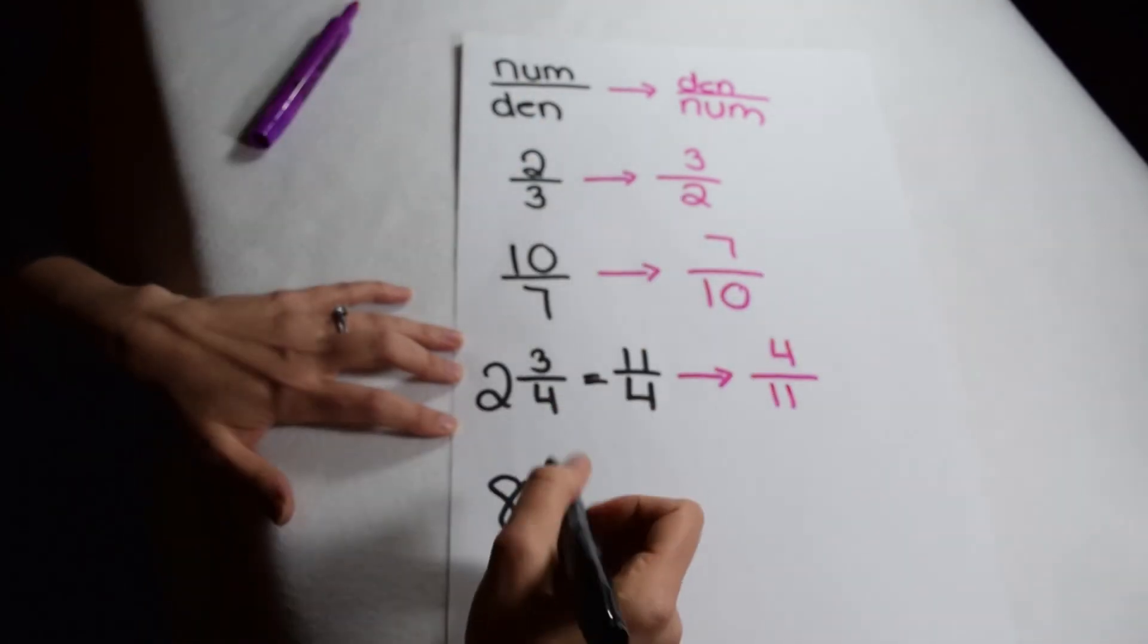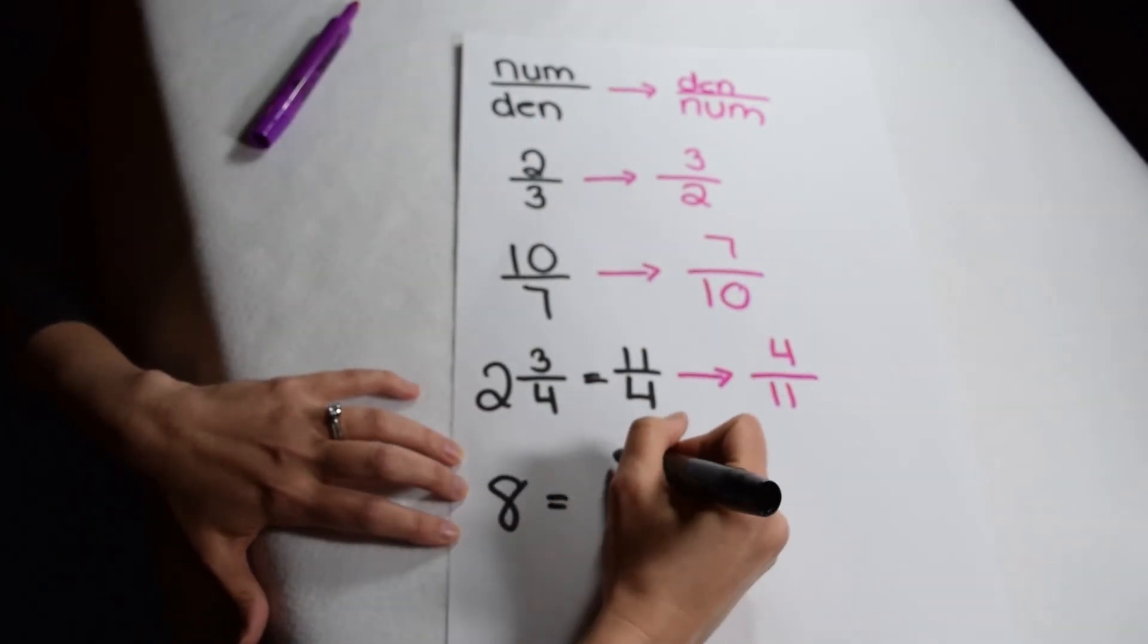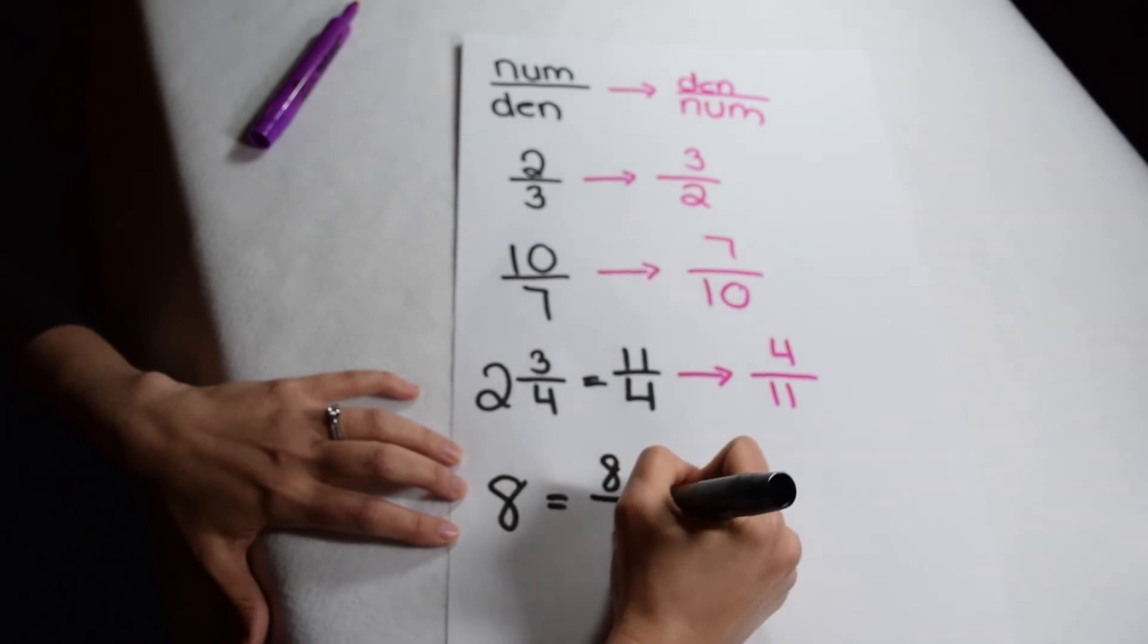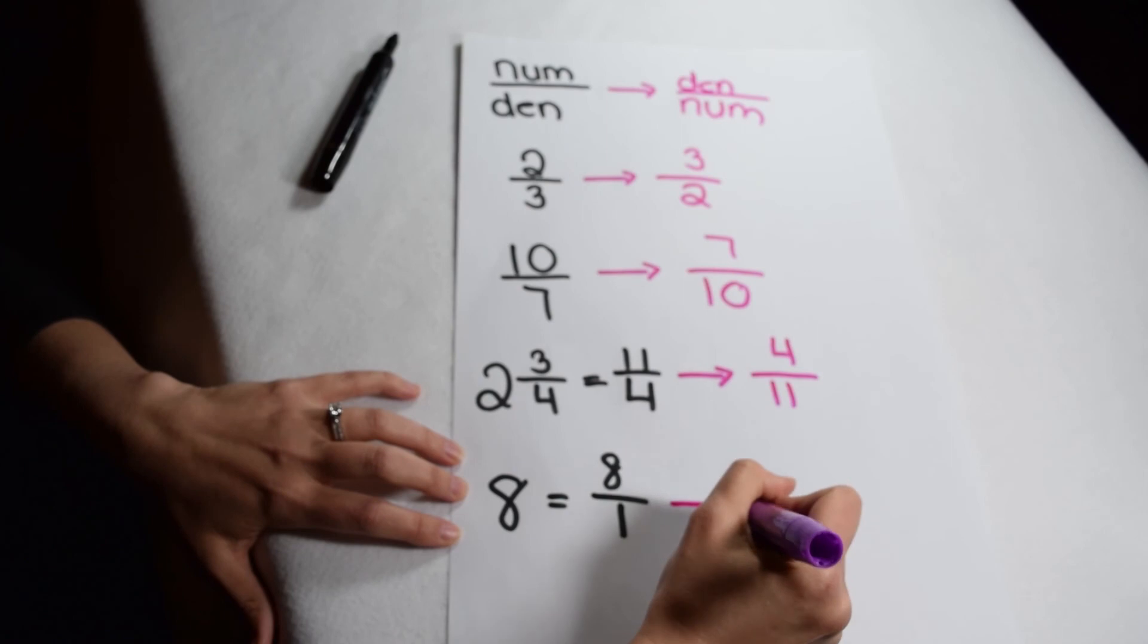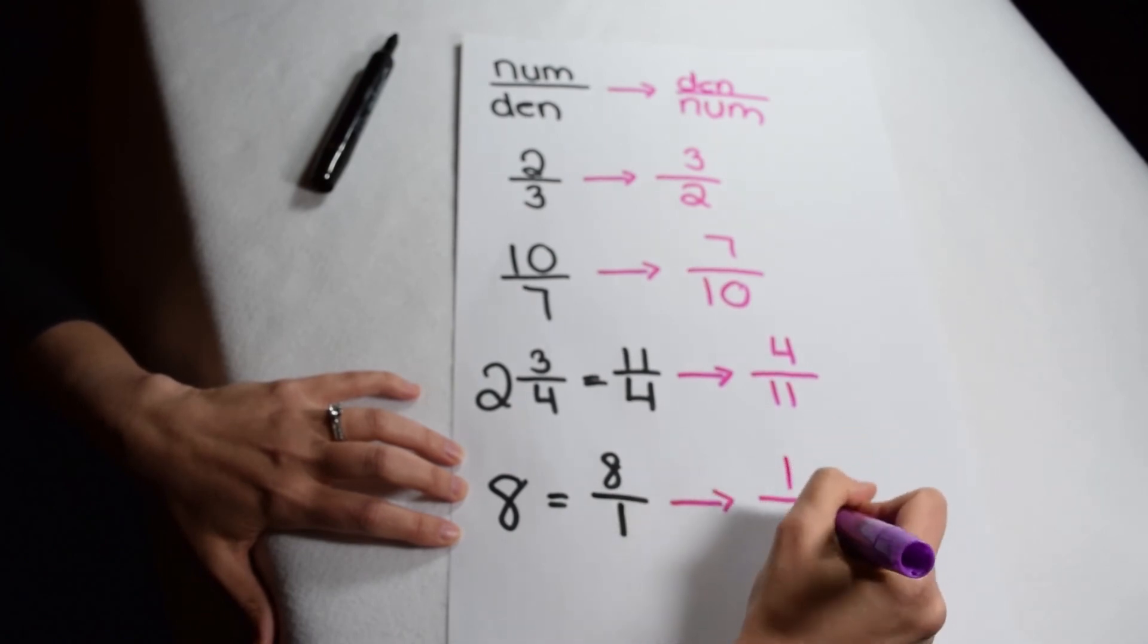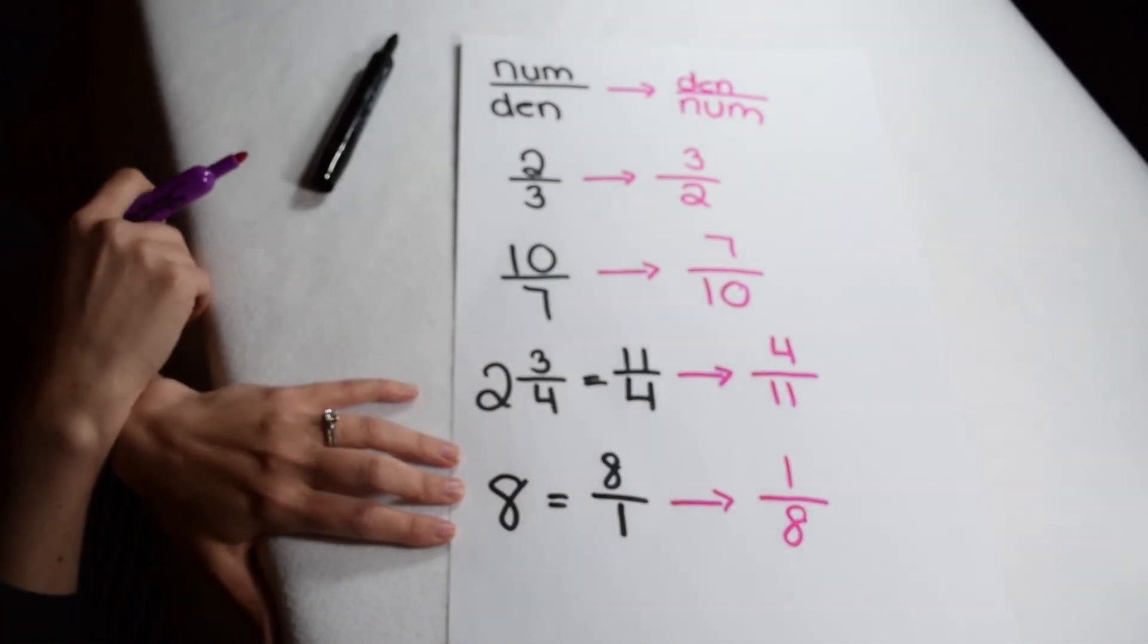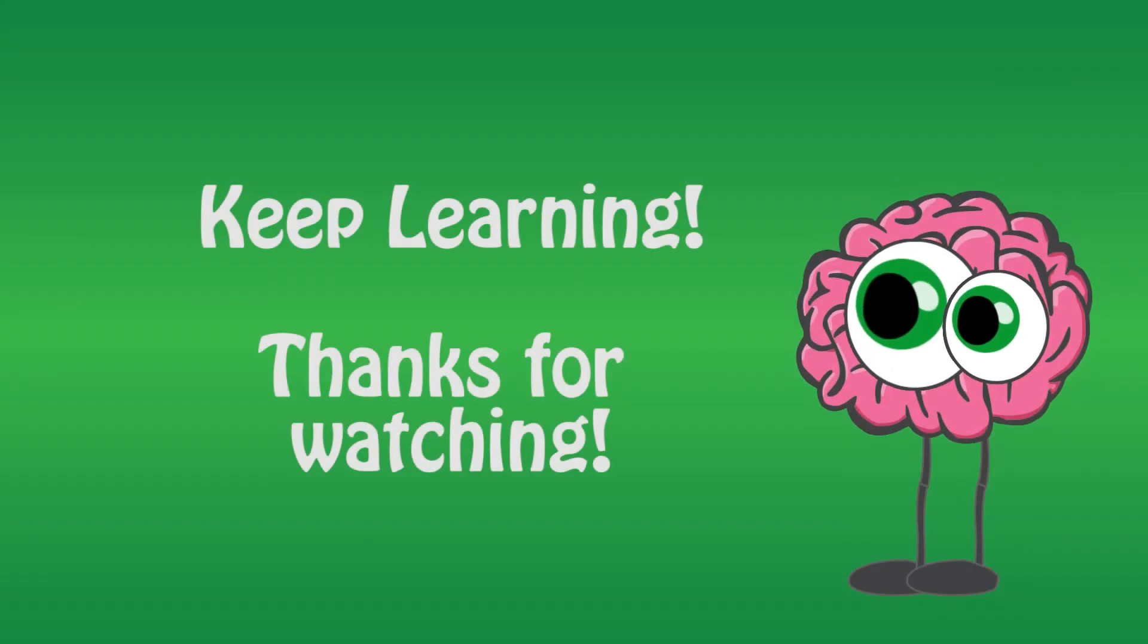The same thing if I have a whole number. The first thing I have to do is turn it into a fraction by using 1 as the denominator. So 8 becomes 8 over 1, then my numerator and denominator can trade places to give me a reciprocal of 1/8.